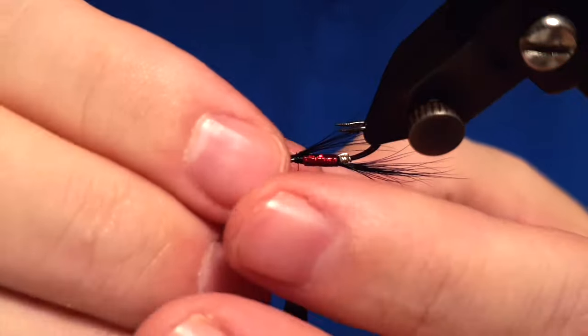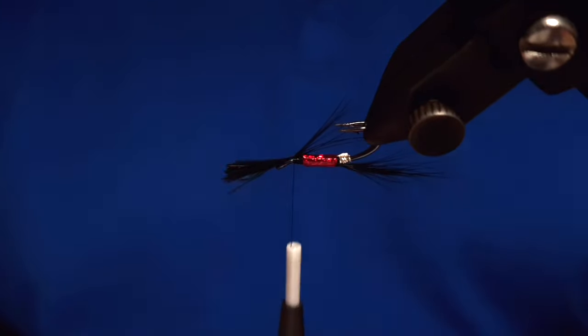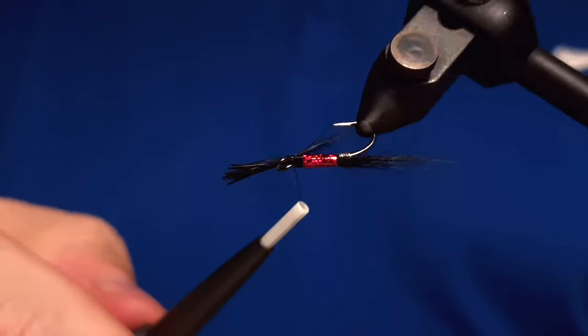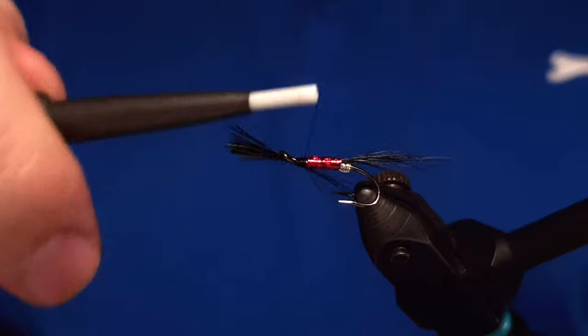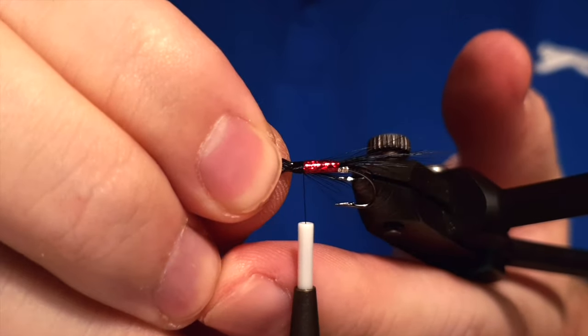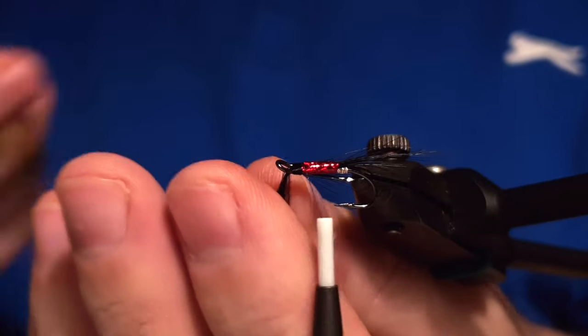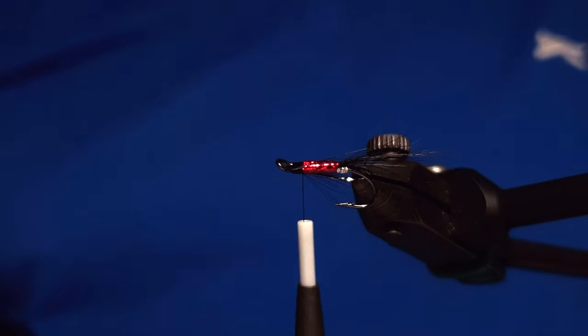Just two wraps. Then you can adjust, make the fibers shorter if you like, before you go and really tie it with firmer wraps so it's going to be staying in place. And we snip off the tag end.